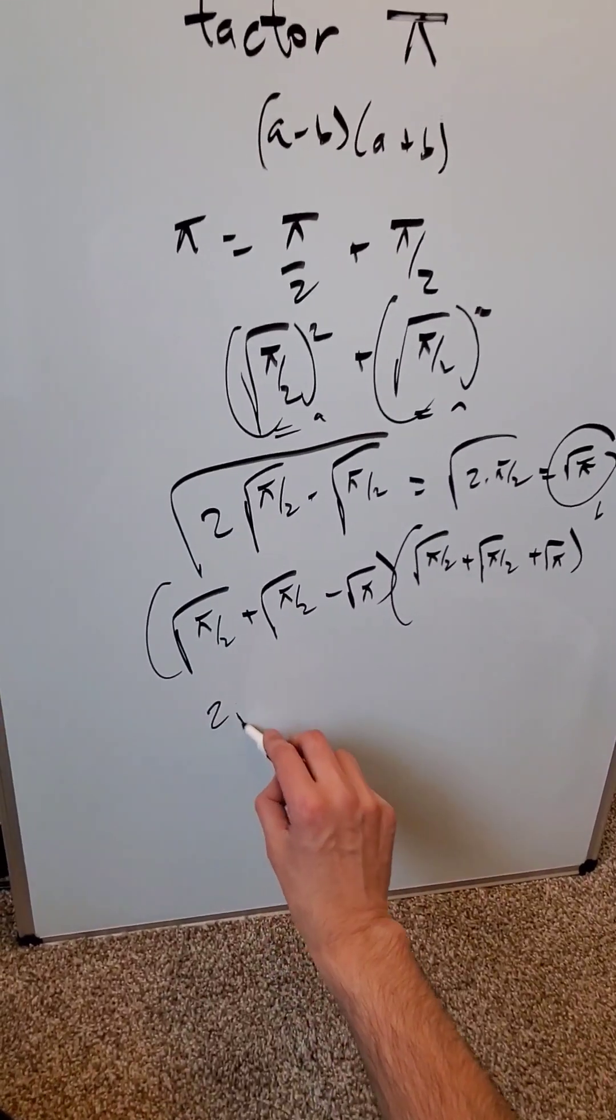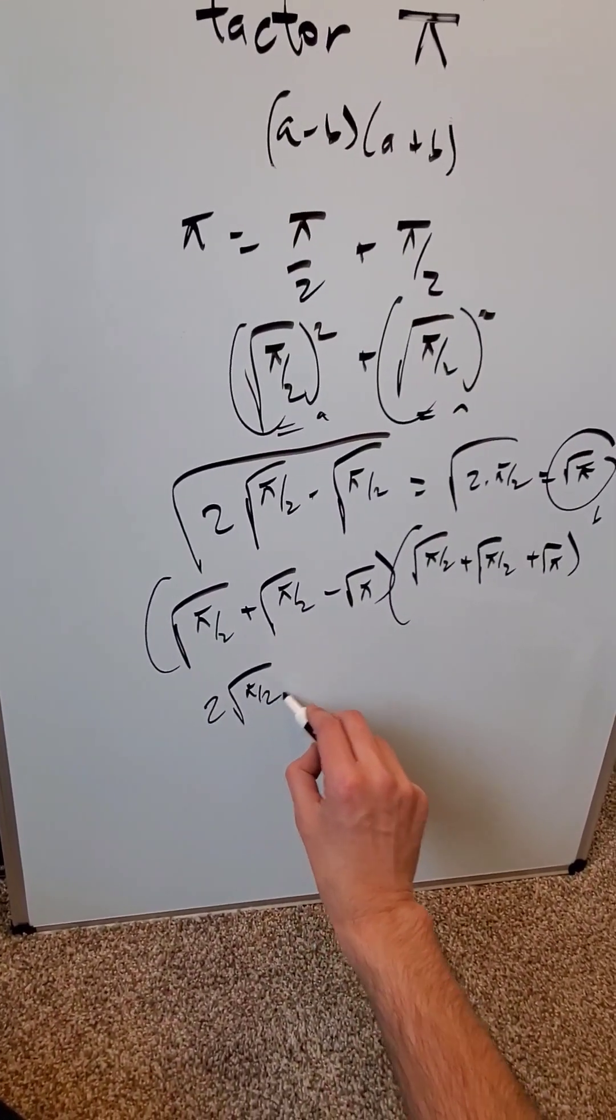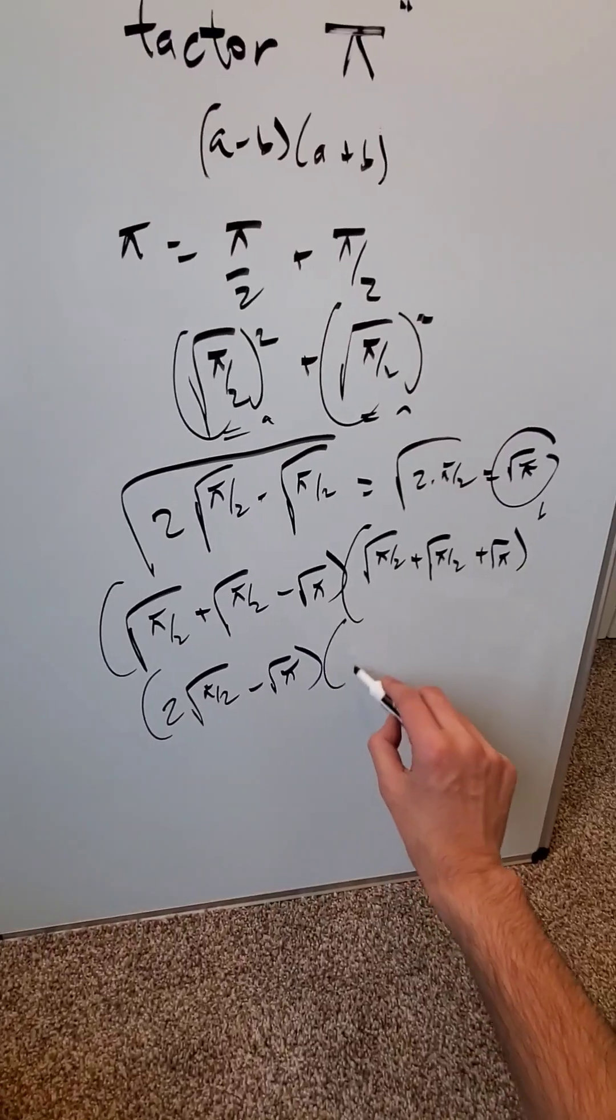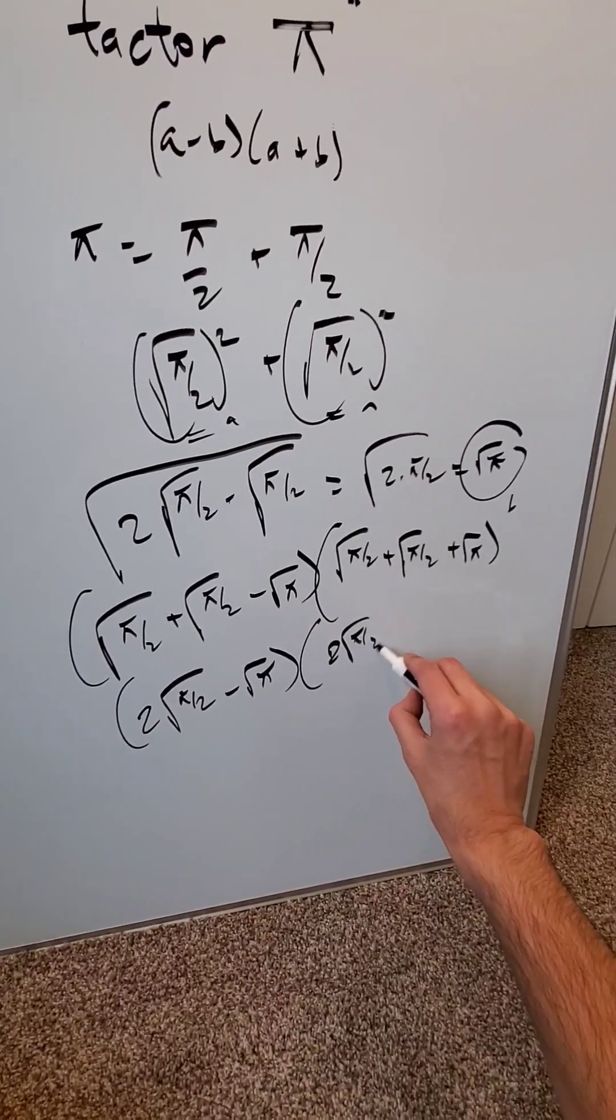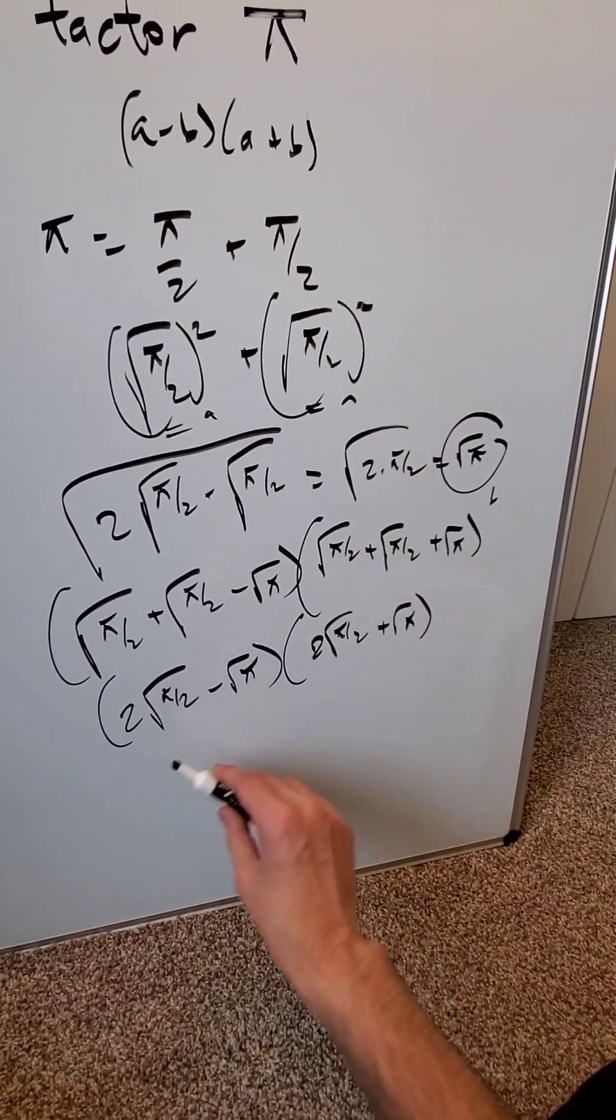Bring everything in condensed form: 2√(π/2) minus √π for (a minus b), and then 2√(π/2) plus √π for (a plus b), and we're done.